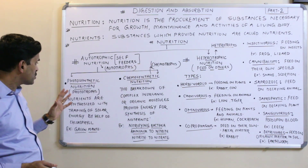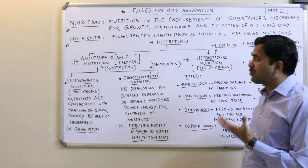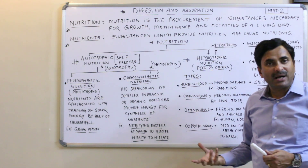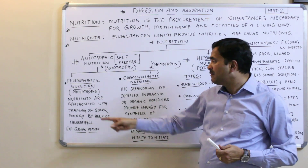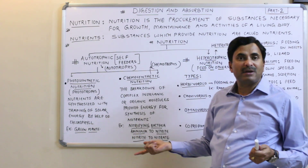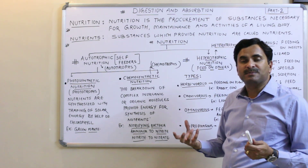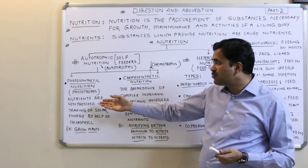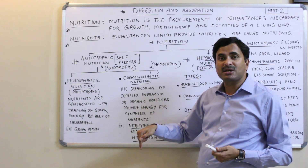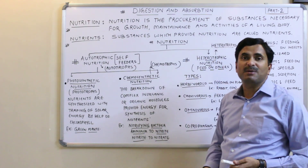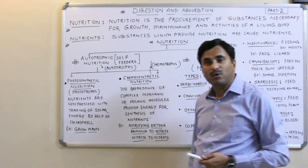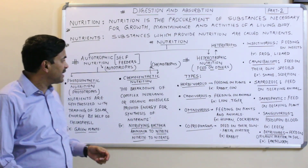Photosynthetic nutrition means the organisms prepare food by utilizing solar energy — because 'photo' means light. The nutrients are synthesized by trapping solar energy with the help of chlorophyll, which is the light-trapping pigment found in plants. All green plants can prepare their own food, so photosynthetic nutrition is found in them and they are called photo-autotrophs.